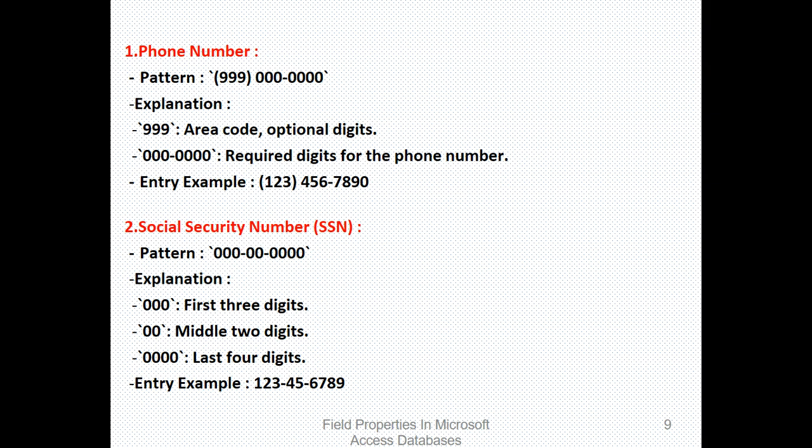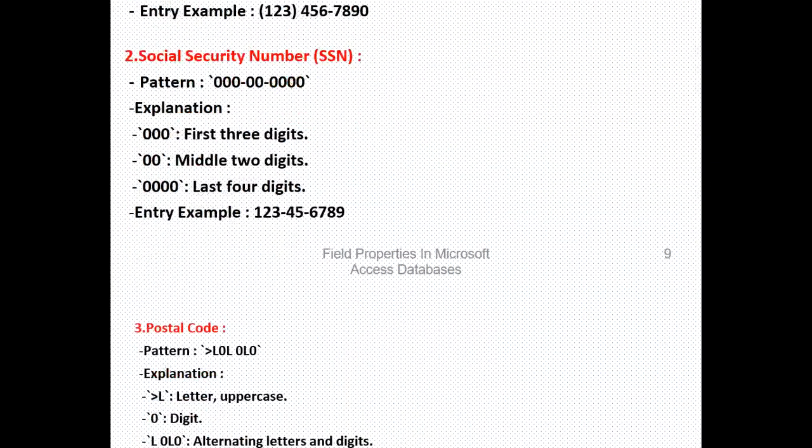For a social security number, we have 000-00-0000. That means the first three digits, then followed by two middle digits, then followed by the last four digits. An example is 123-45-6789. You can see the input mask is just like a pattern of how data will be placed in your field names.